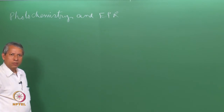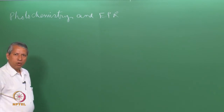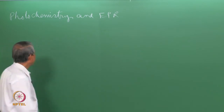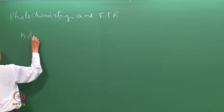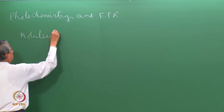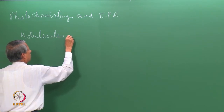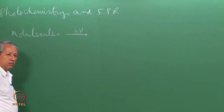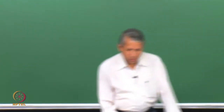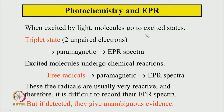What happens when molecules absorb light? Molecules are exposed to light — what happens? When excited by light, the molecule will of course go to an excited state, provided the light is absorbed by the molecule.